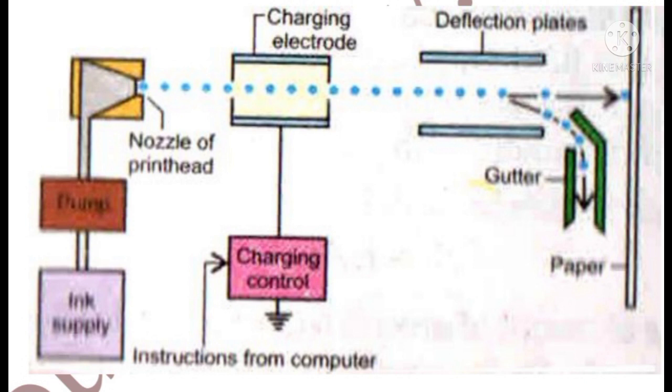When the print head moves over the paper which is to be inked, the charging control turns off the charging electrodes.